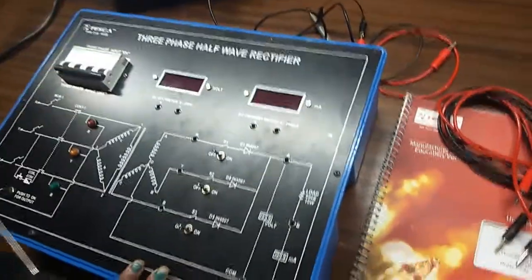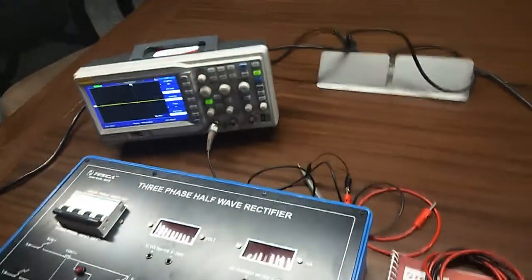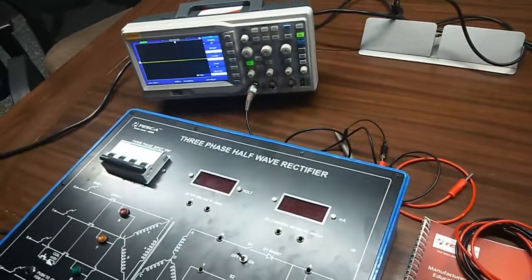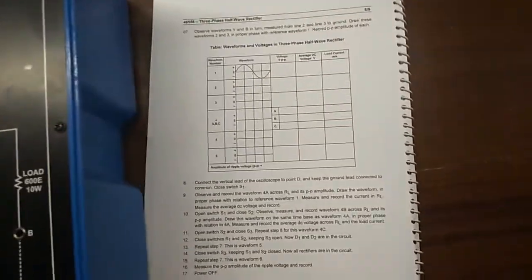We will need a three-phase supply for this, and this is the CRO to observe the output waveforms. Our objective is to observe the half-wave rectification.